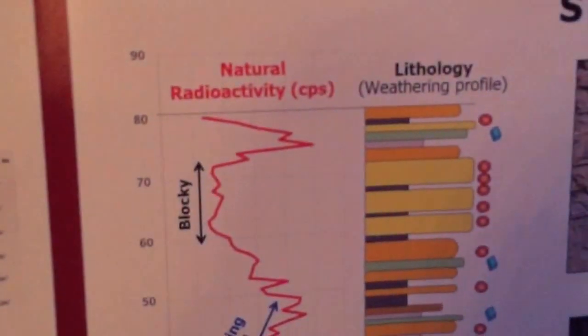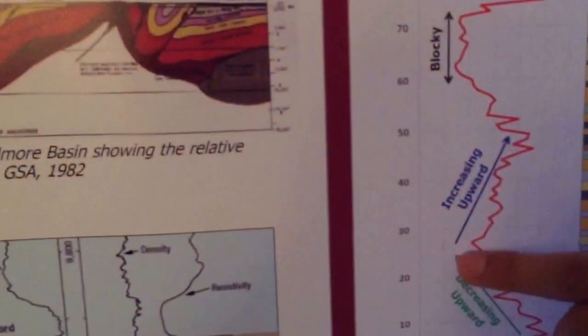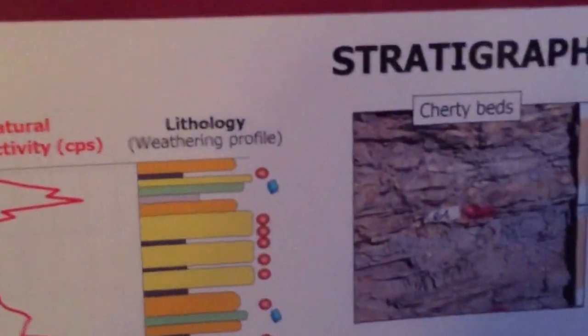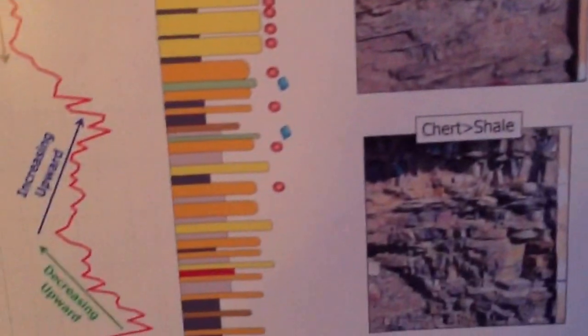Based on the natural radioactivity and the outcrop, we recognize three main patterns: the increasing upward, decreasing upward, and blocky patterns. These are the pictures of the bottom of each pattern, and these are the pictures of the top of each pattern.